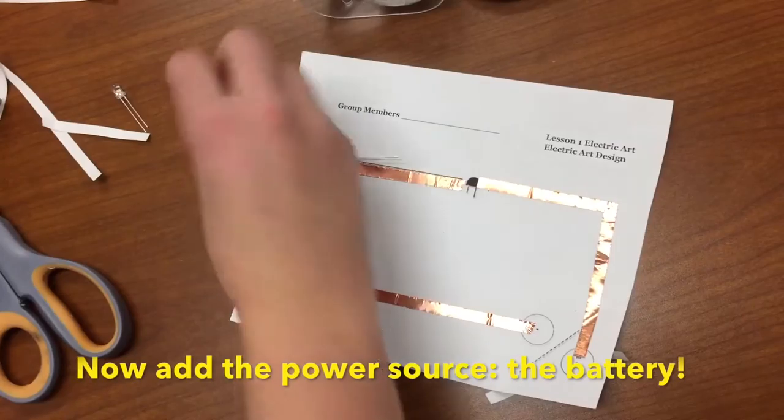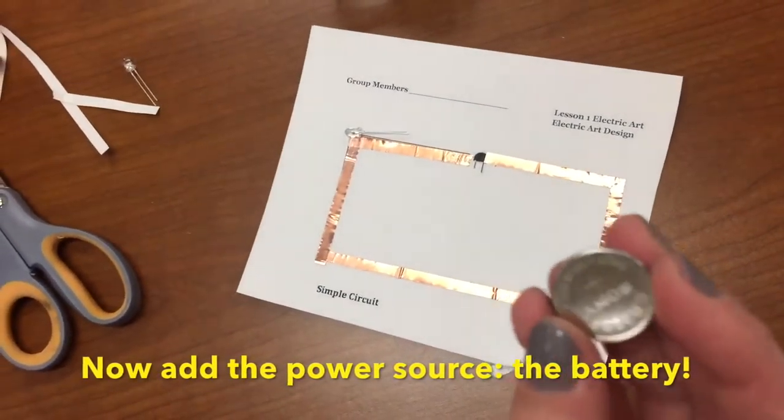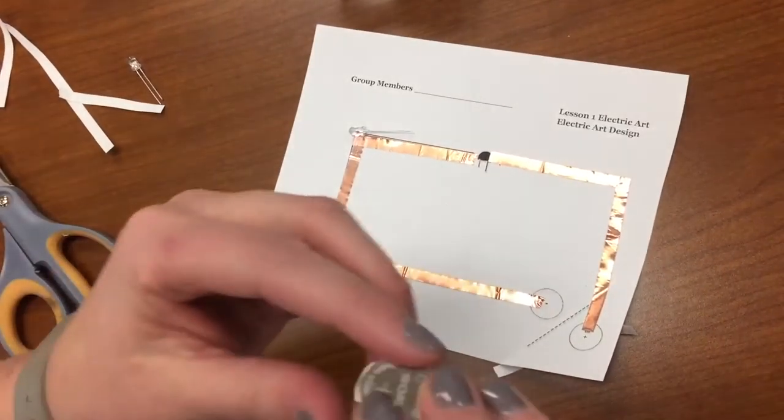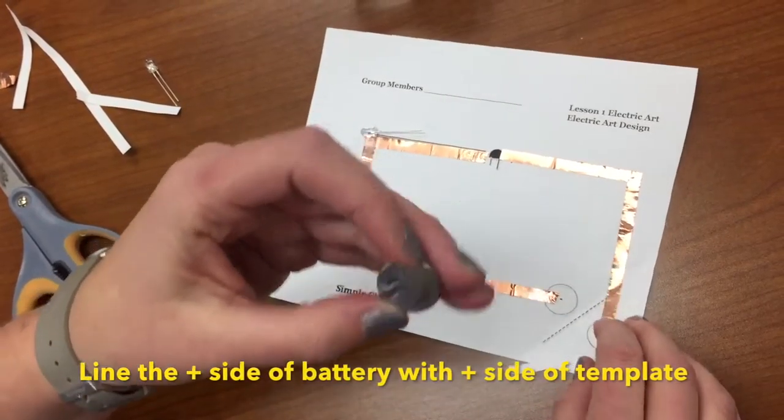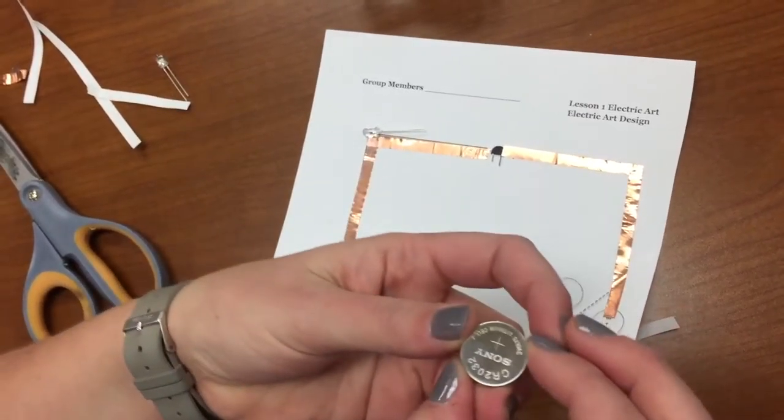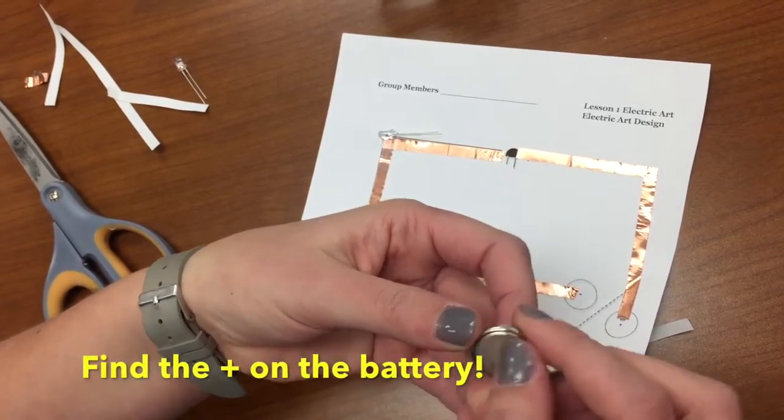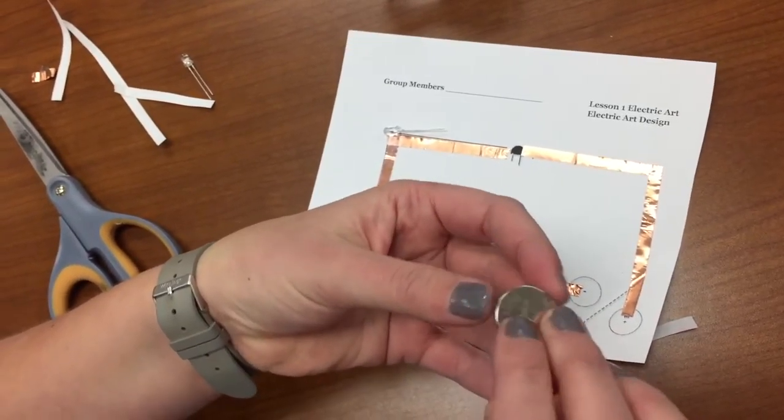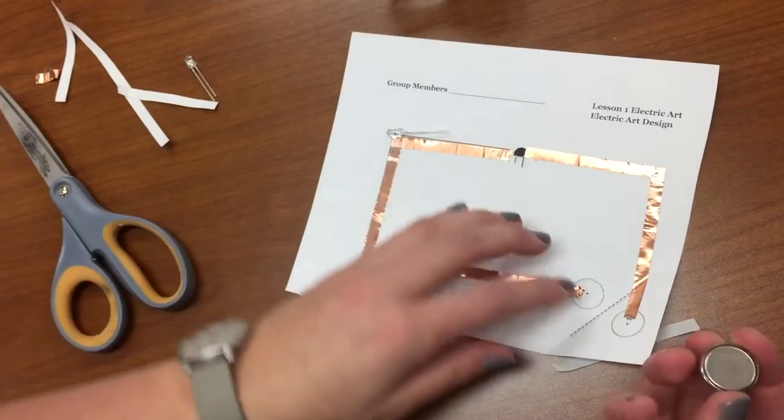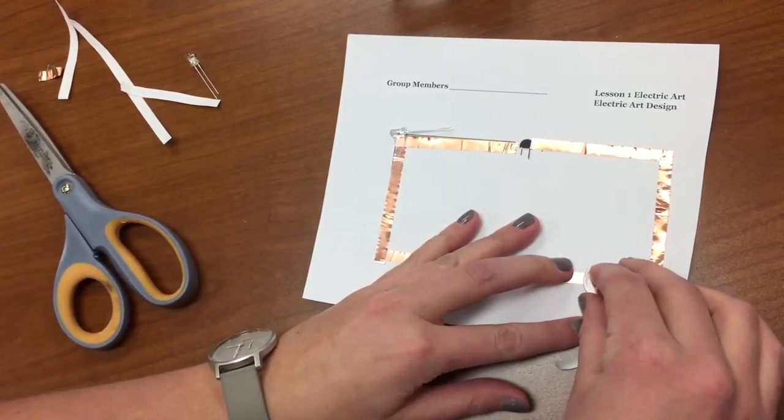The next step will be adding your power source which is the battery. You're going to want to make sure that you line up the plus side with the plus side and the negative side with the negative side. How you tell with the battery is finding the plus on the battery. The negative side isn't labeled but you can figure it out by looking for the plus. So I'm going to put the negative side on top of the negative location.